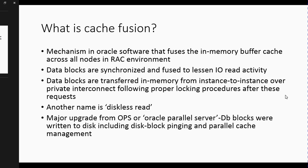So basically, what is Cache Fusion? It's the mechanism to fuse in-memory buffer cache across all nodes. As opposed to what you had before with the previous technology, data blocks were basically just being read to and written to disk. Cache Fusion has taken away that need to write to disk, so now you have less IO and less disk activity.